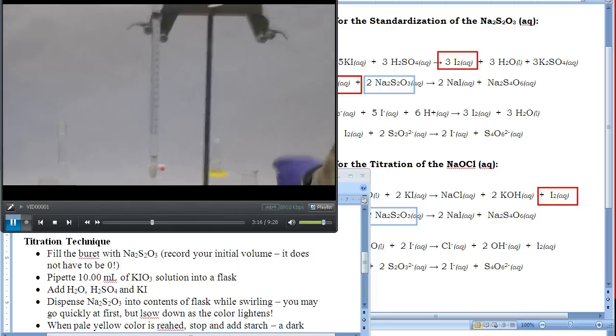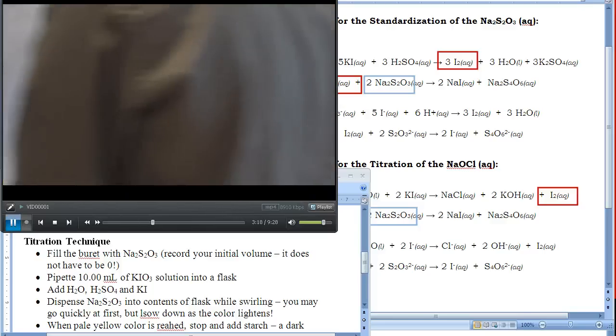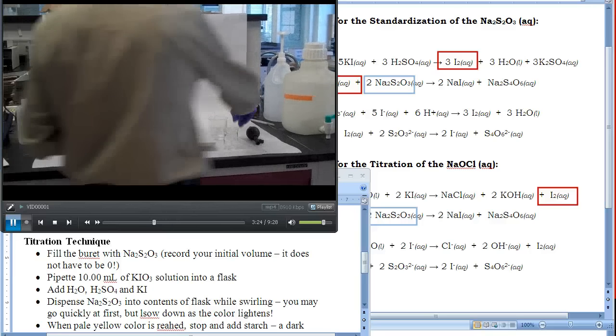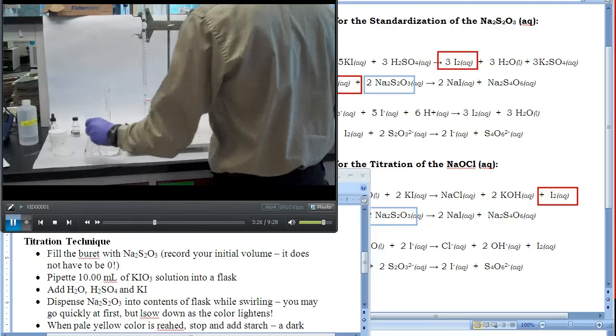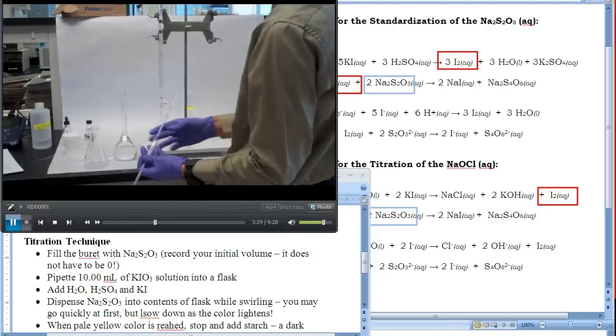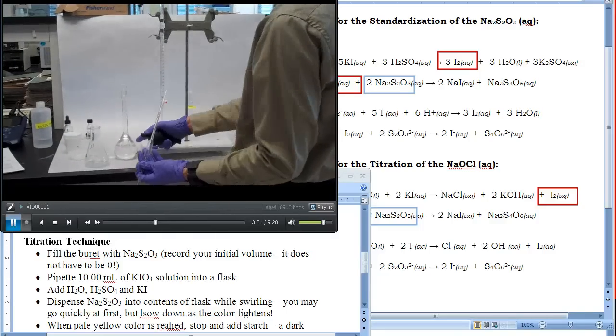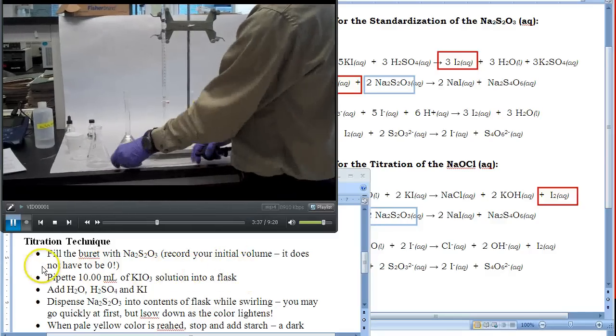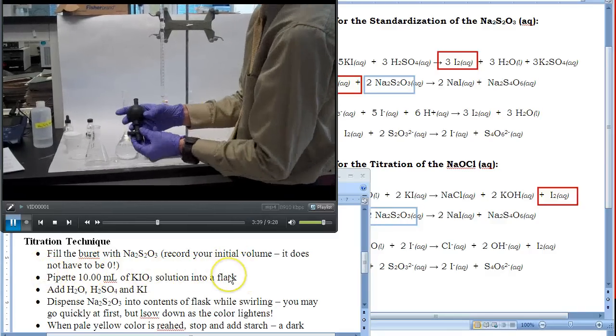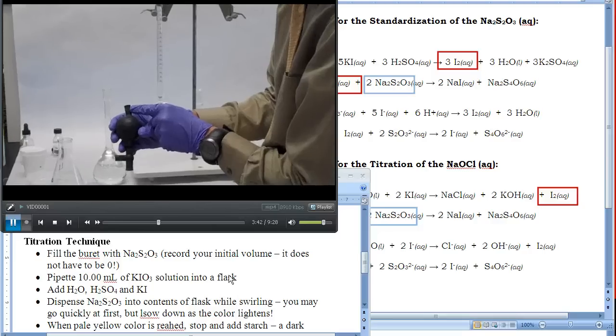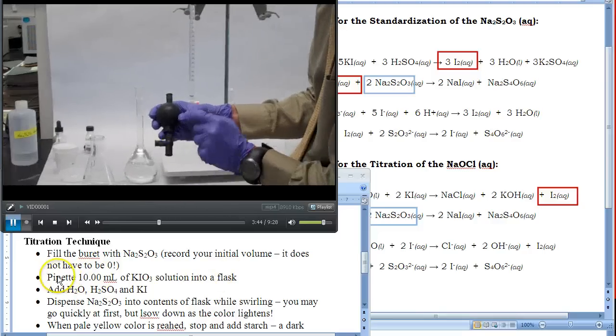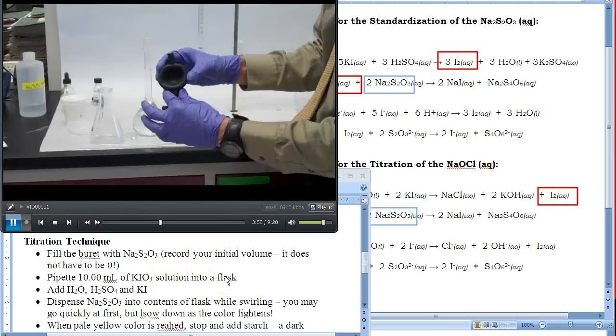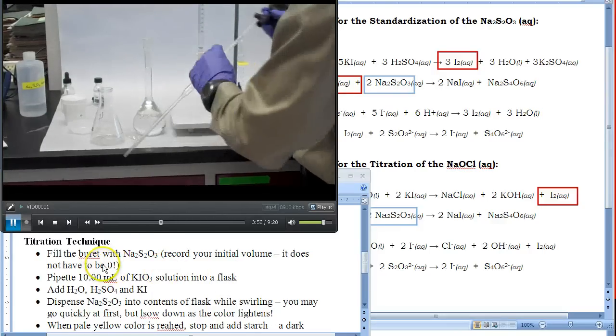Here we are dropping it down right to the 0.00 marker, and the tip is now full. It's important that the tip be full because if it's not, the first milliliter you dispense doesn't go into your reaction—it goes into filling your tip. Now I'm preparing some of the other materials we'll need, which is potassium iodate solution that you will have made earlier. We need a very precise amount because we're going to use it in the stoichiometry.